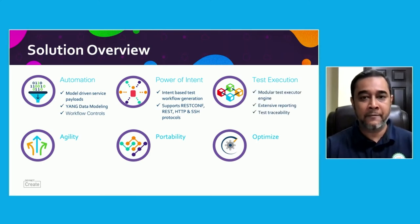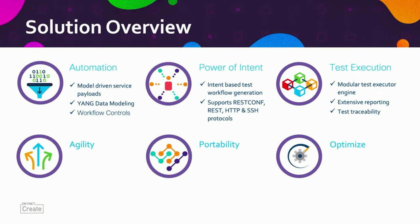Talking about test execution — every single test automation platform should have a powerful test engine, and we have one. This engine has a difference: it provides workflow controls. Whenever you build a test workflow, you have complete control over which phase of the workflow should run and which should not. It also provides very extensive reporting, capturing every detail that went through during test execution. Additionally, if you are managing an end-to-end QA lifecycle with a test manager in place, we provide integration with your test manager as well for complete test traceability.